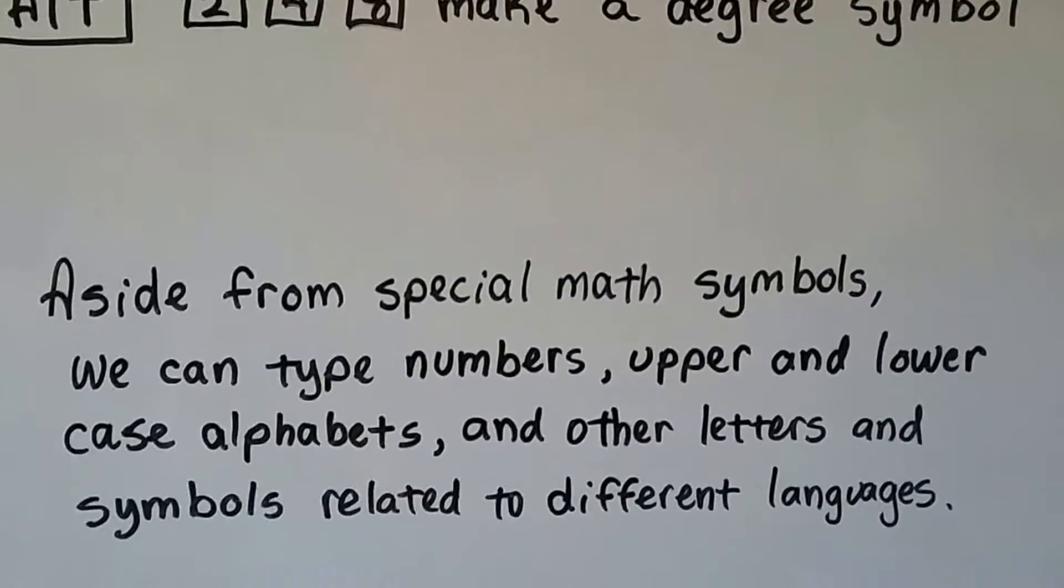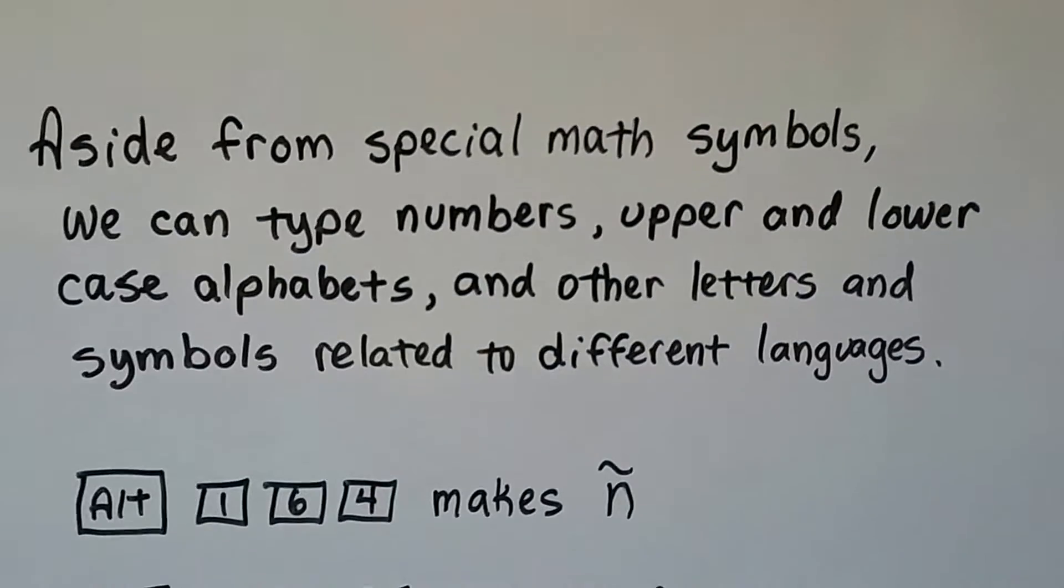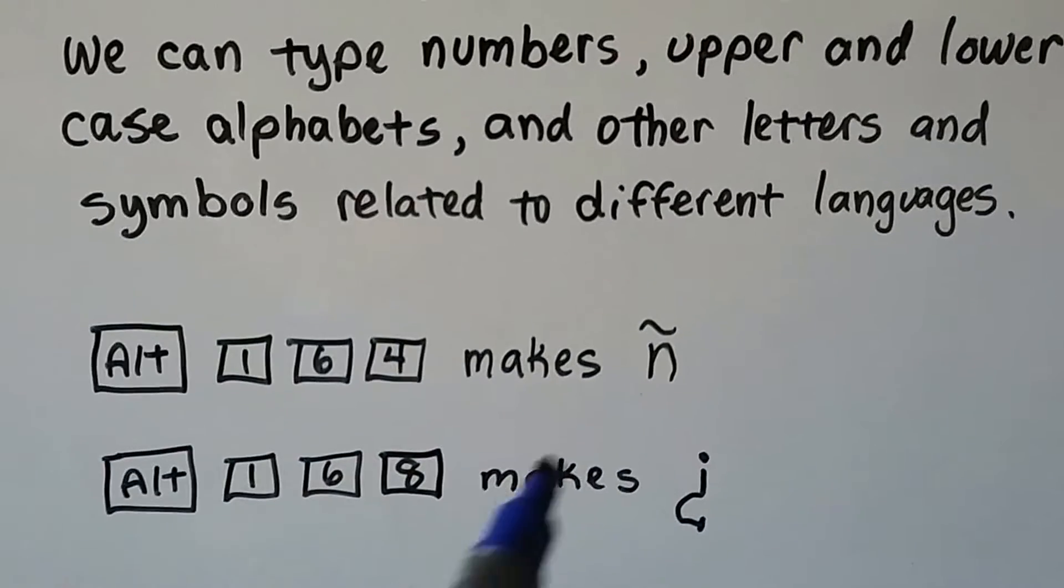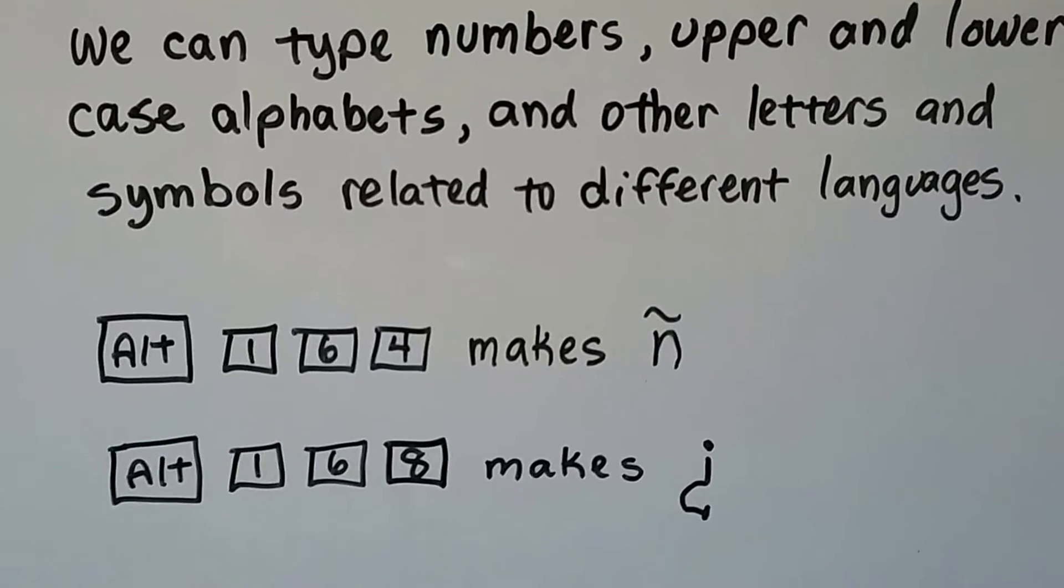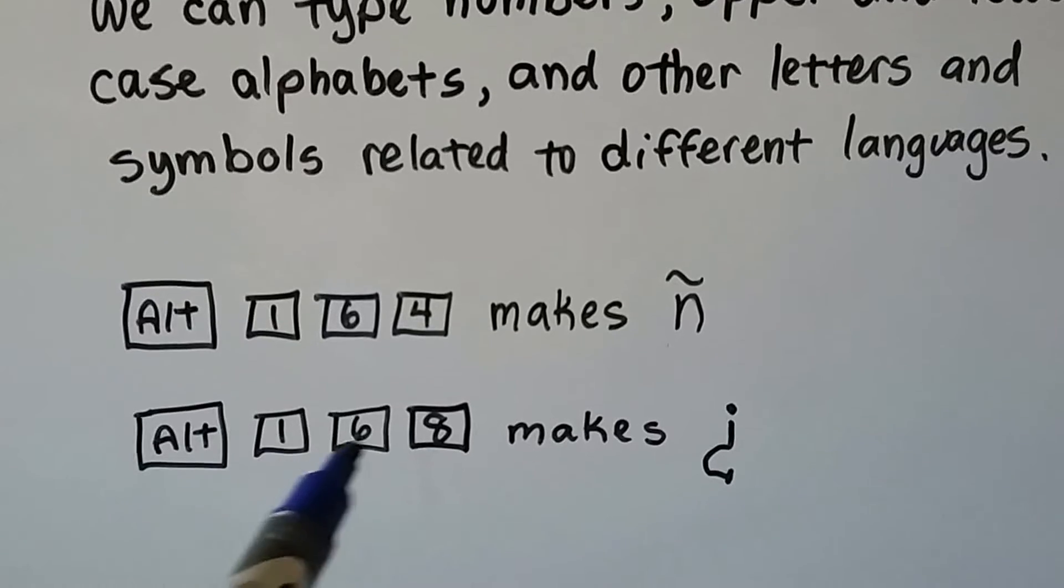Aside from special math symbols, we can type numbers, upper and lowercase alphabets, and other letters and symbols related to different languages. You can make an N with a little tilde on top if you hit ALT 164. You can even put the upside down question mark with ALT 168.